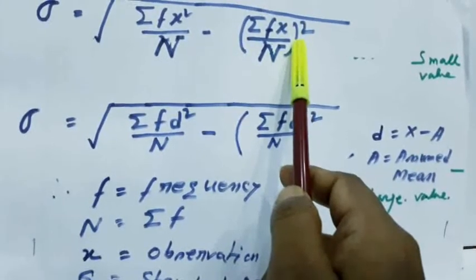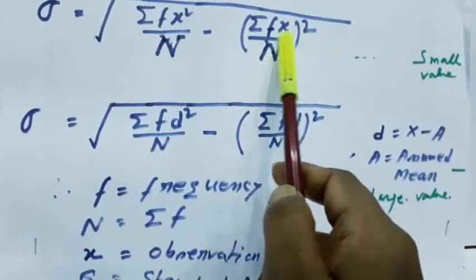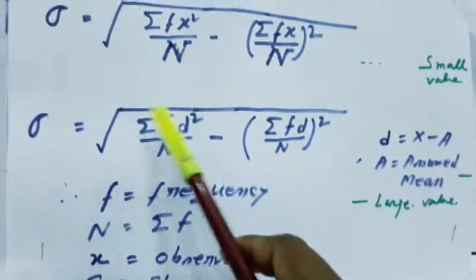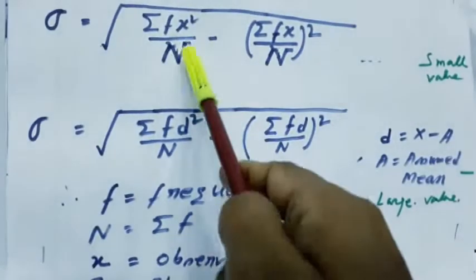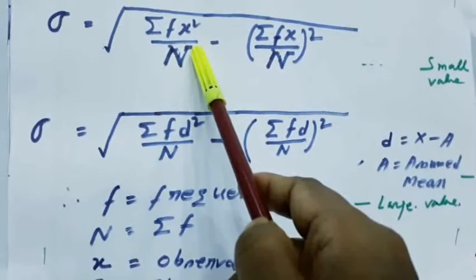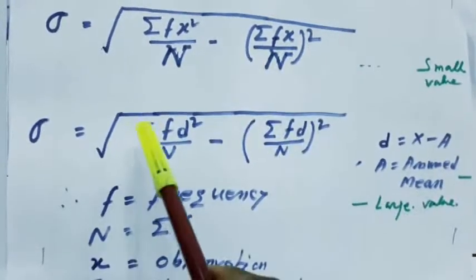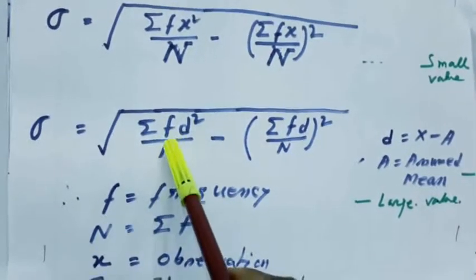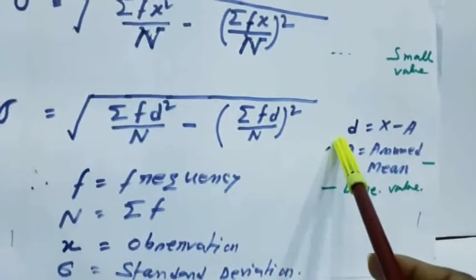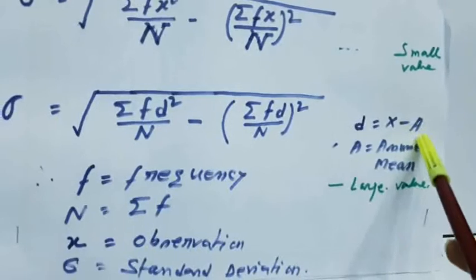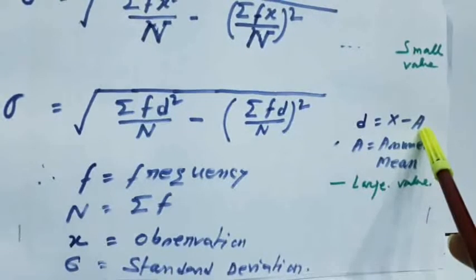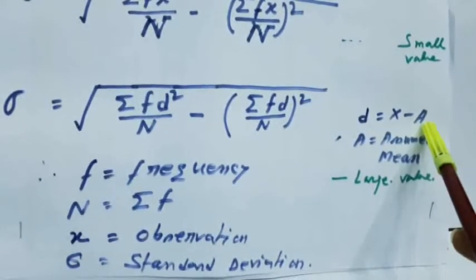But if the size of the observation or the magnitude of the value of the observation is large, in that case we will use a different formula. In this case directly we will put the value in the formula, but when the size of the value is large then we will find d, means deviation, calculated as x minus A, where A means assumed mean. You can also use the actual mean but it's not necessary to get the actual value — you can take a near value of mean also.